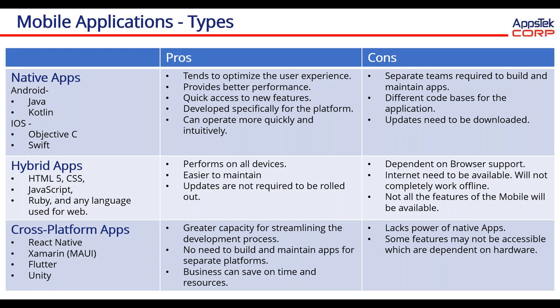The disadvantage of native apps is that they require more resources to develop and maintain. The code base is separate for Android and separate for iOS. All updates are required to be downloaded and installed, and the download size might be bigger compared to other options. To develop native Android applications, Android uses Java or Kotlin with Android Studio. For iOS applications, it is Objective-C and Swift, used with Xcode.